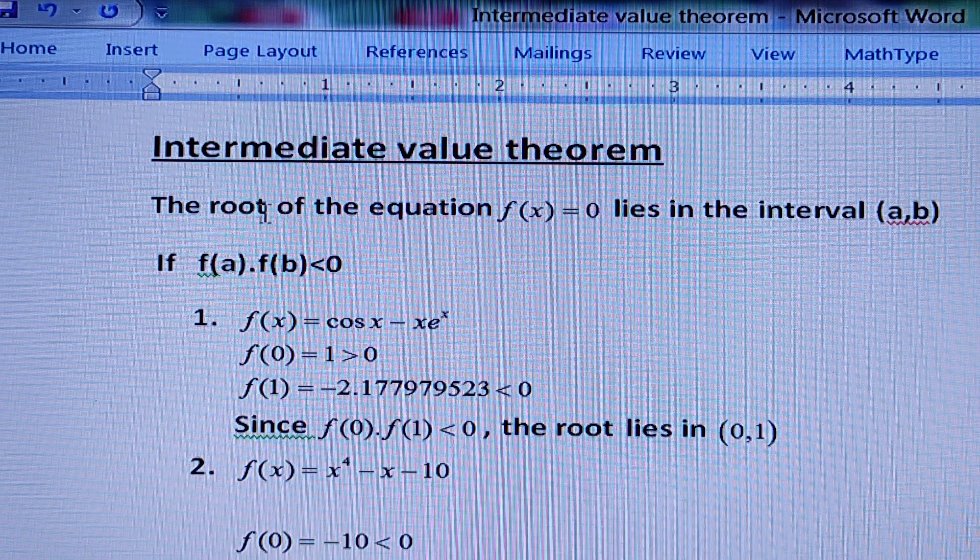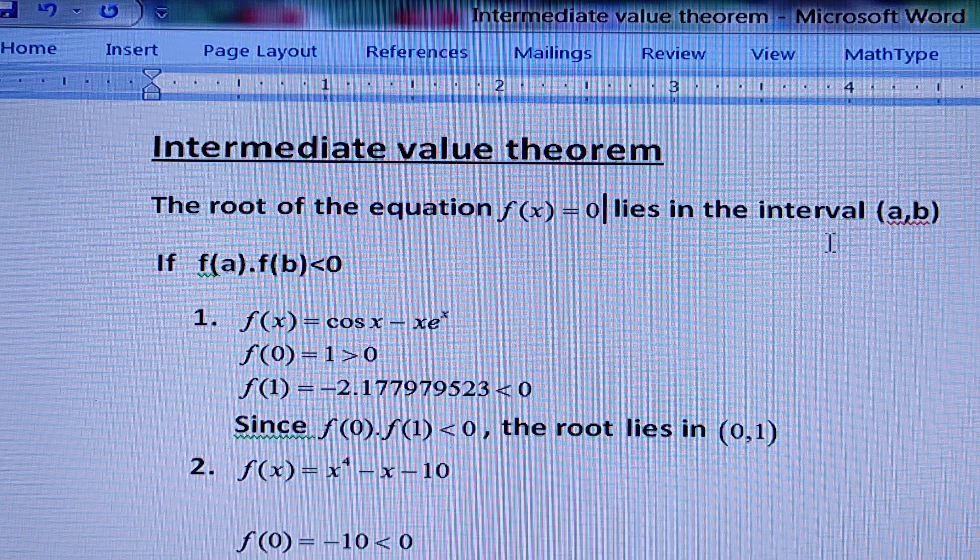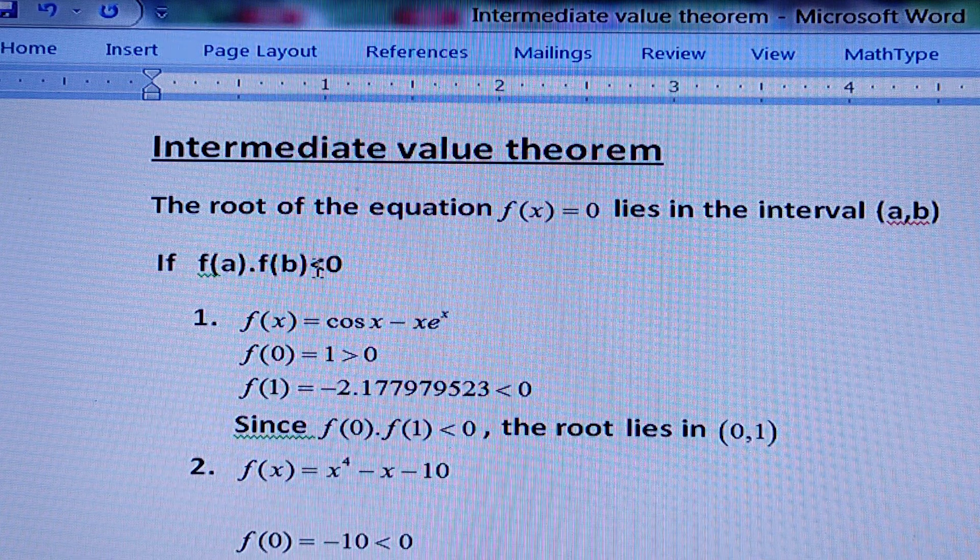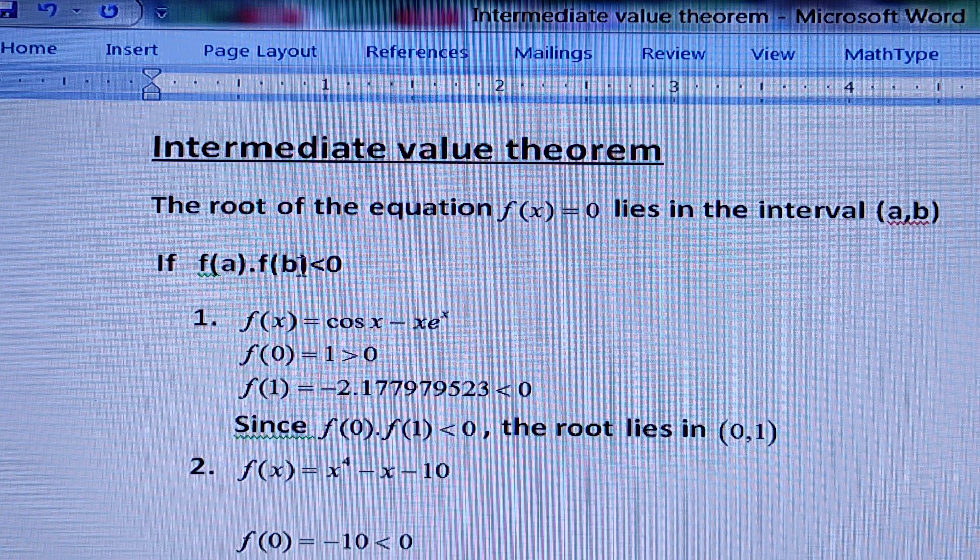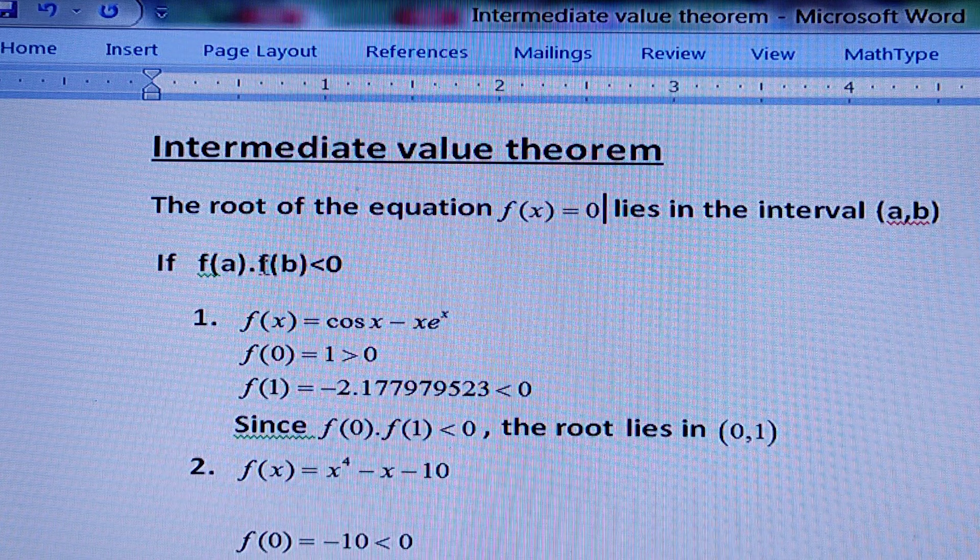Let us see what the theorem is. The root of the equation f(x) = 0 lies in the interval, open interval (a,b), if f(a)·f(b) < 0. That means the product of f(a) and f(b) must be less than 0. And if this condition satisfies, then the root will lie between a and b.